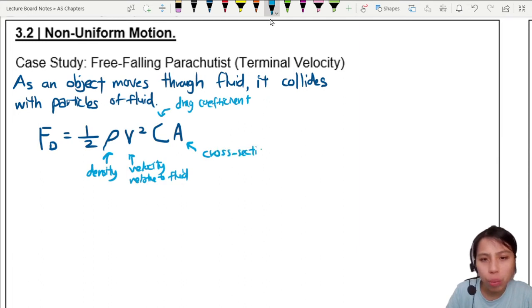How big is the object? If it's bigger, you're going to slam into more particles with greater drag or air resistance. So this is a cross-section area that you are moving at.